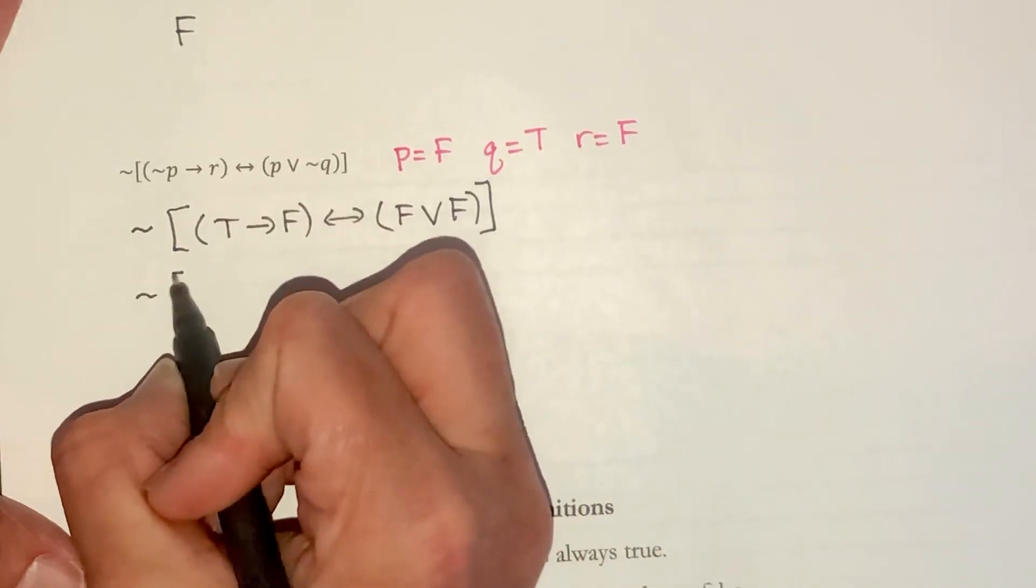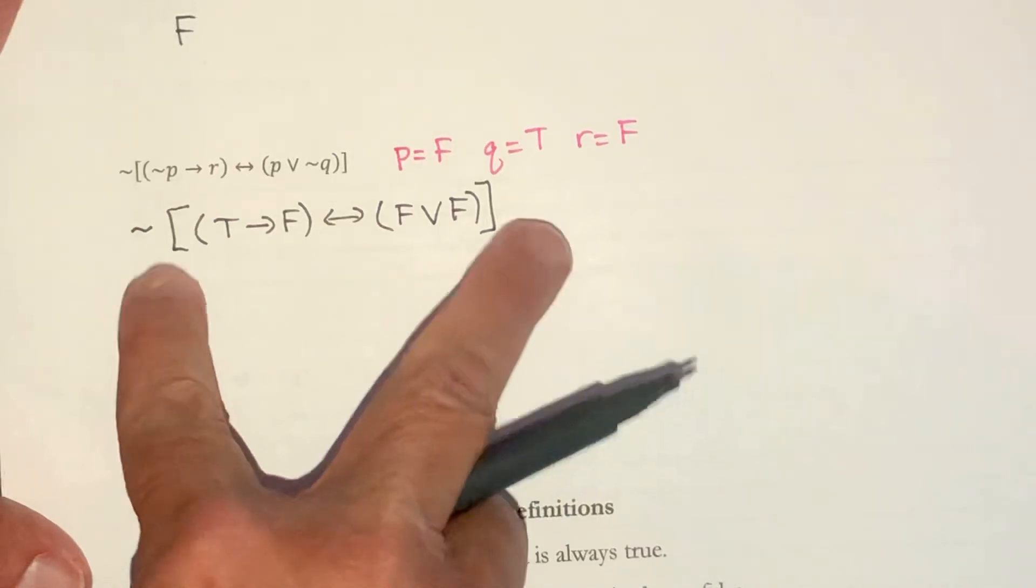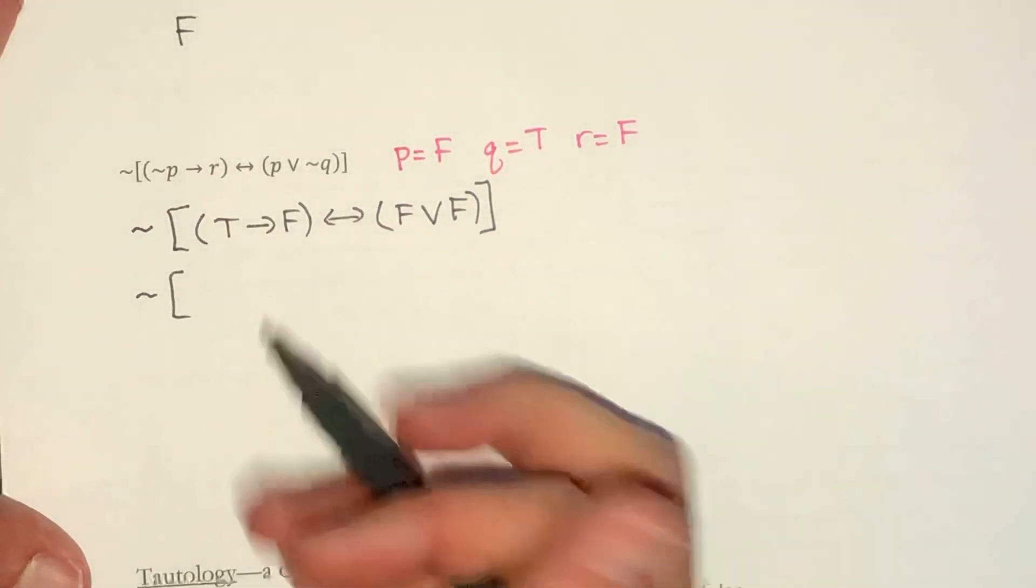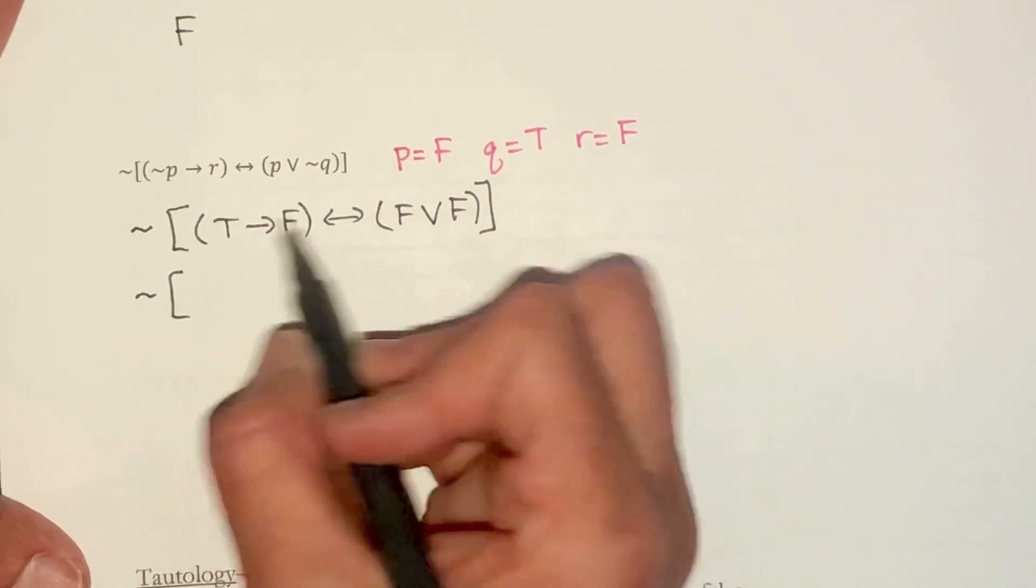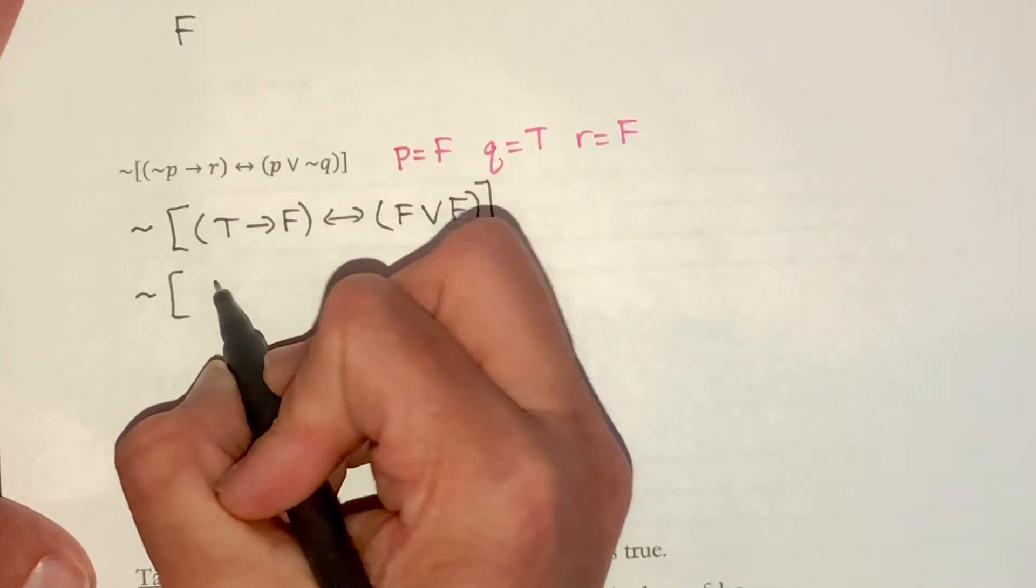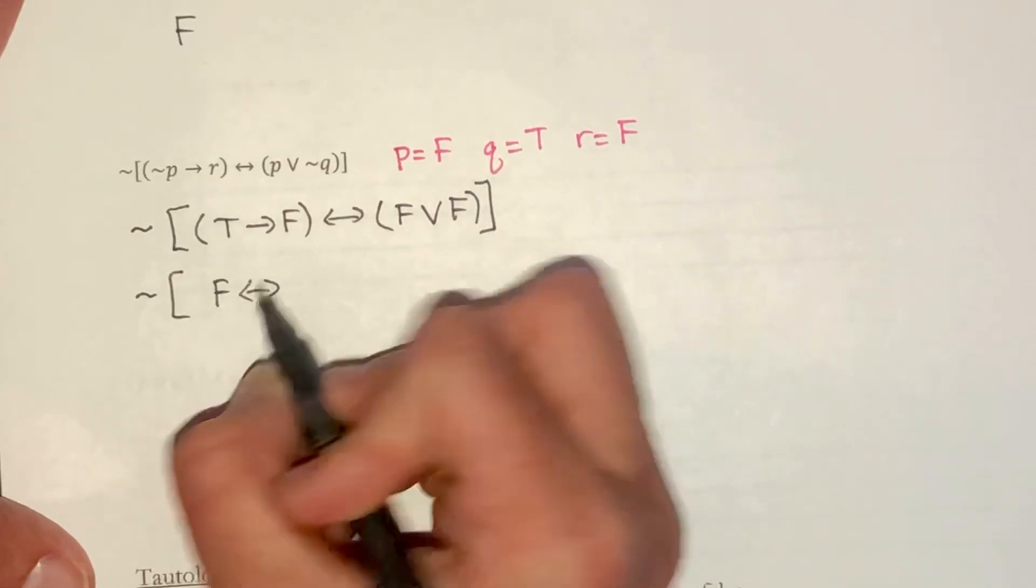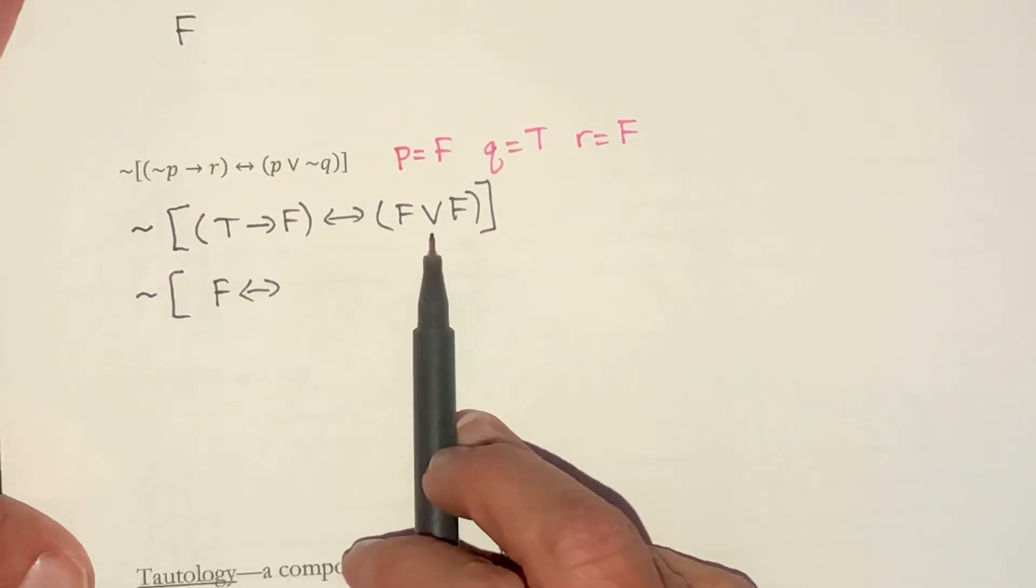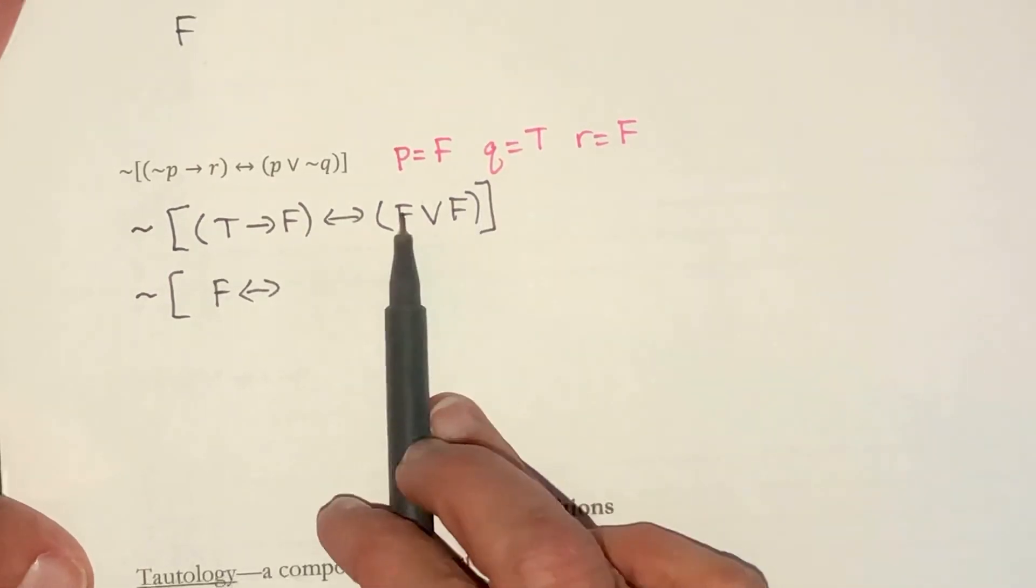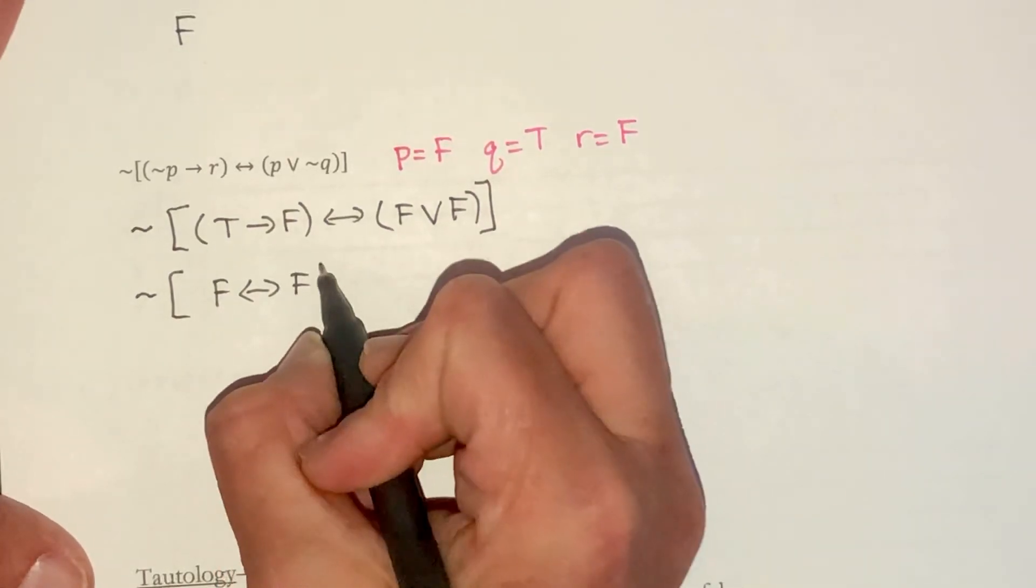I'm going to keep this not until the very end. That's going to be my last step. Because everything else is inside brackets or parentheses. So on the conditional, if I have true, if true, then false. This is the only case where the conditional is false. If and only if. False or false. With or, it is true if there is a true in there. Otherwise, it's going to be false. Since both of these are false, this is false.